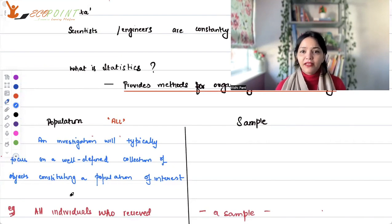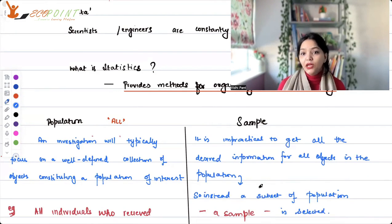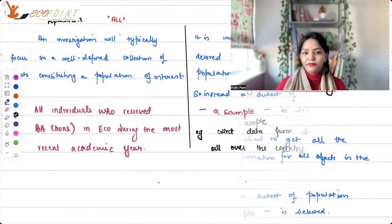When I say I'll take samples, that means in the whole country, I will collect data from some colleges. For example, I can't go to the entire nation, but I can get the data for any university maybe. It is impractical to get all the desired information for all objects in the population. So instead, a subset of population, a sample, is selected.